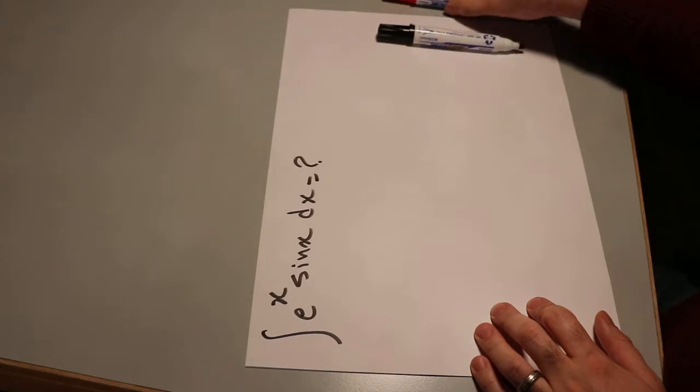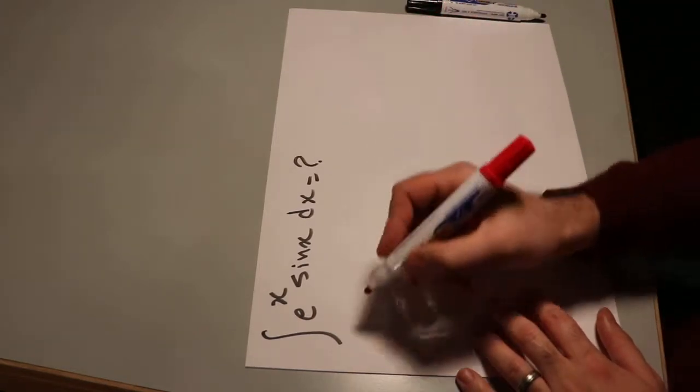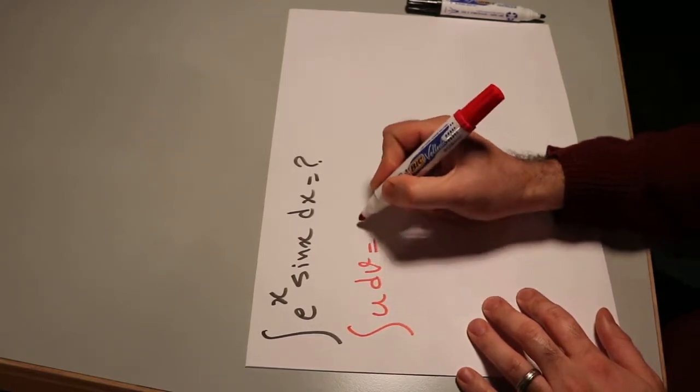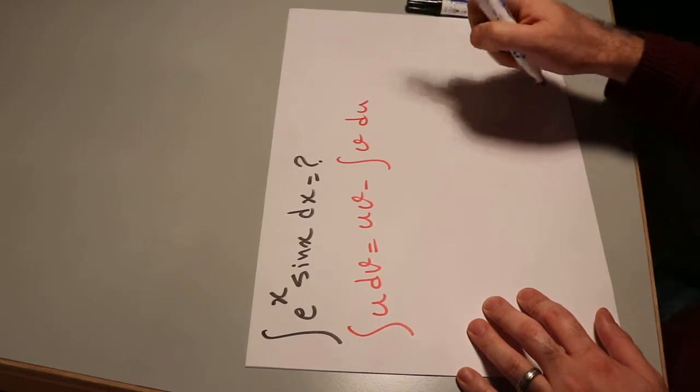This integral you can solve using the formula for integration by parts. That is, integral u dv is equal to uv minus integral v du.